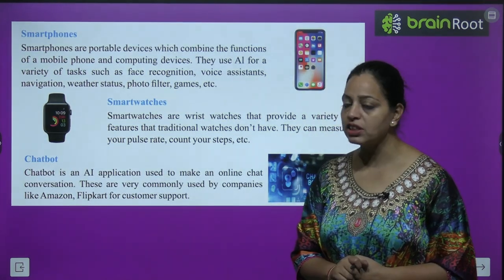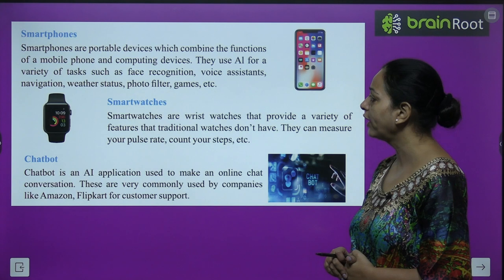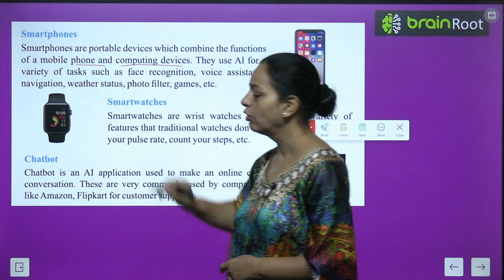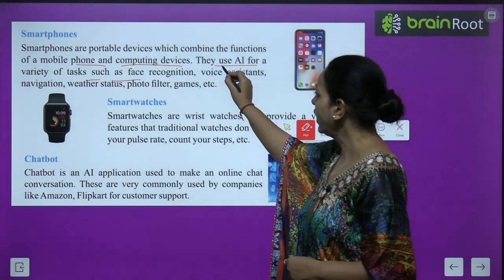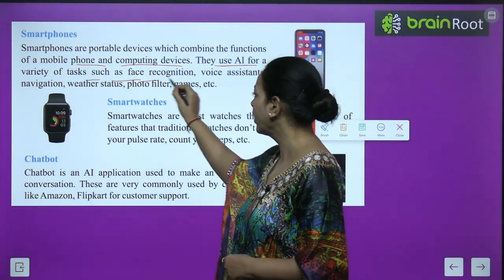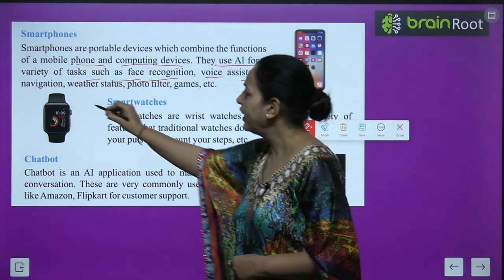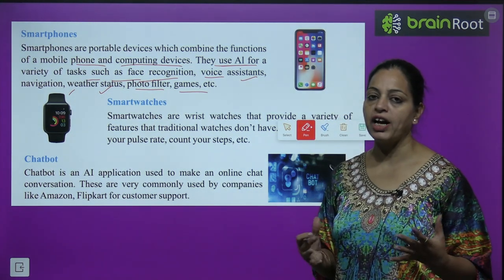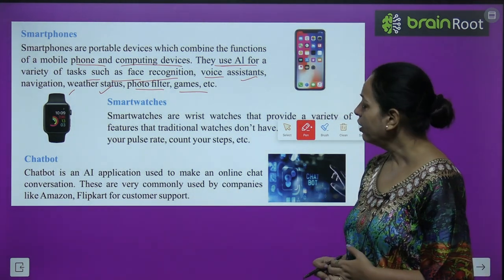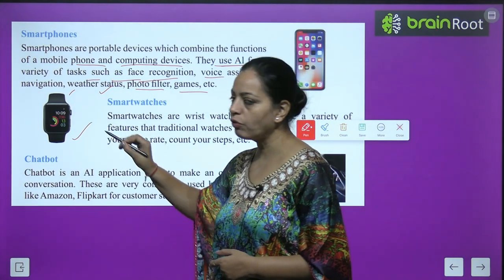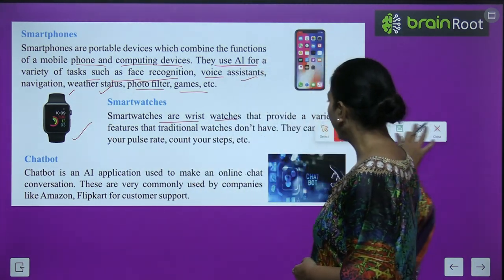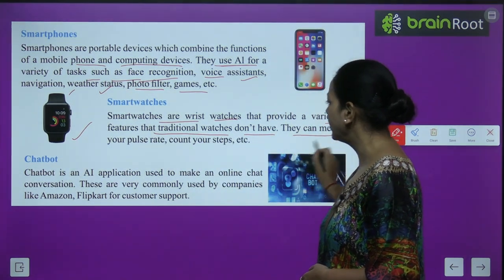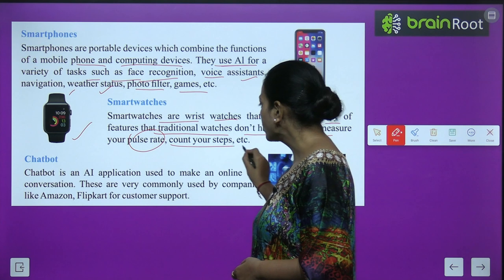Smartphones are portable devices which combine the functions of a mobile phone and computing devices. They use AI for a variety of tasks such as face recognition, voice assistance, navigation, weather status, photo filters, and games. Smart watches are wrist watches that provide a variety of features that traditional watches don't have — they can measure your pulse rate and count your steps.